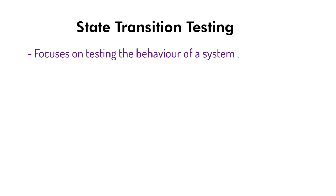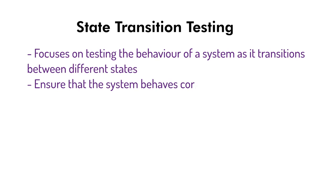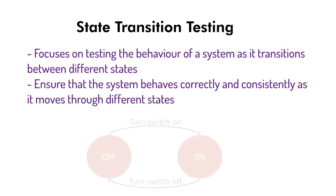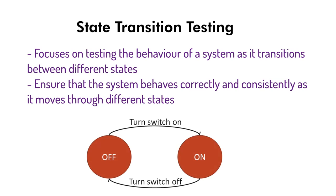What is state transition testing? State transition testing is a software testing technique that focuses on testing the behavior of the system as it transitions between different states. It is particularly useful for testing systems that have a defined set of states and undergo specific transitions based on inputs or events. The goal is to ensure the system behaves correctly and consistently as it moves through different states.